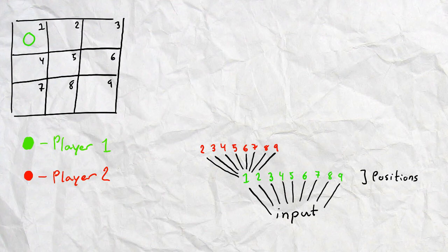That we can illustrate with another set of branches like this. Now imagine your opponent chooses position number four. Then it's your turn again. And we illustrate this again with a new set of branches.